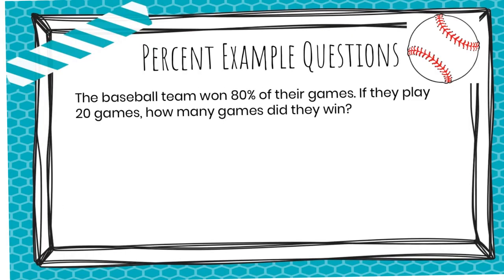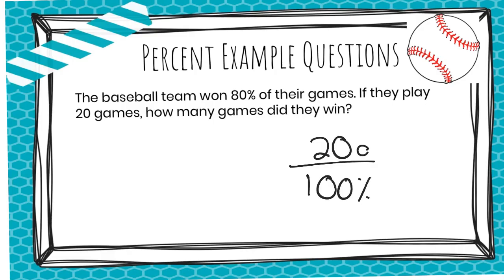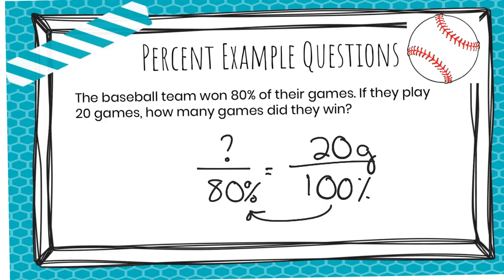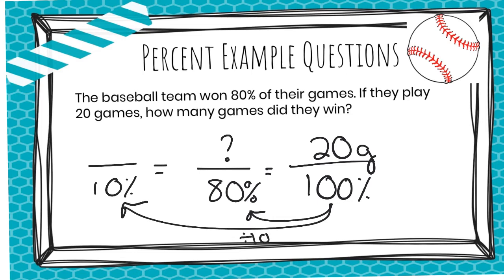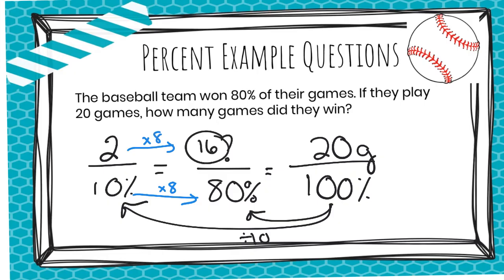The baseball team won 80 percent of their games. If they played 20 games, how many games did they win? We have to think of 100 percent as the 20 games they played. There's not an easy connection from 100 percent directly to 80 percent, so we need to simplify down to a lower number — for example, going down to 10 percent, which is called a benchmark. To go from 100 percent down to 10 percent, we divide by 10, so 20 divided by 10 is 2. Then, 10 percent times 8 gives 80 percent, so 2 times 8 gives 16. They won 16 games.